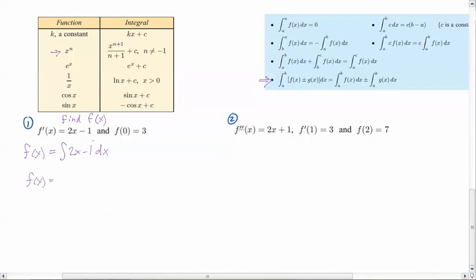So this is going to become f of x equals, and then I'm going to do the 2x, so that's going to become x squared. I've still got the 2, but then I've got to divide by the n plus 1 as well, and then minus. And for a constant, the integral is the constant times x, so minus 1x. Don't forget that c, we haven't solved for it yet.